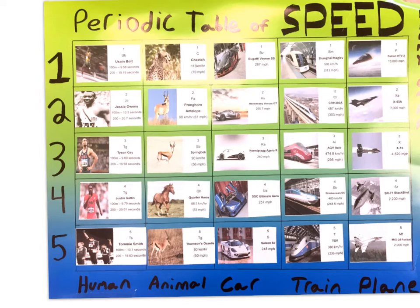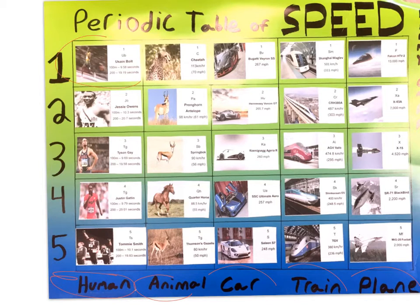Another example: things that go fast. The categories are humans, fastest animals, cars, trains, and planes. Within each group they ranked by speed — this one is actually a bit upside down because you always want the biggest ones at the bottom, so the fastest should be at the bottom. Animals are faster than humans, cars are faster than animals, trains faster than cars, and planes are faster than trains. So you can see it gets bigger going from left to right.